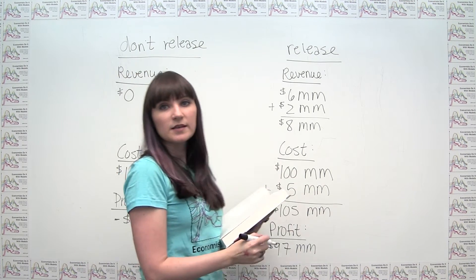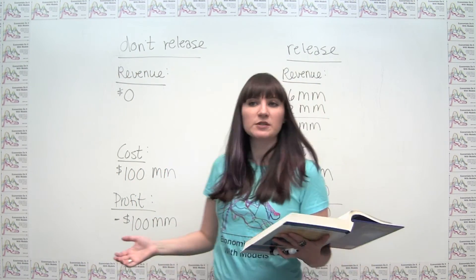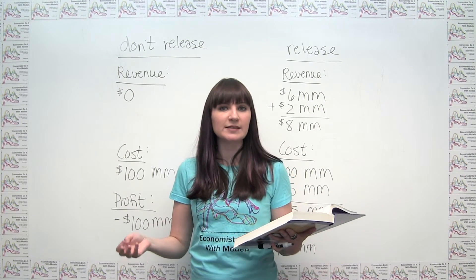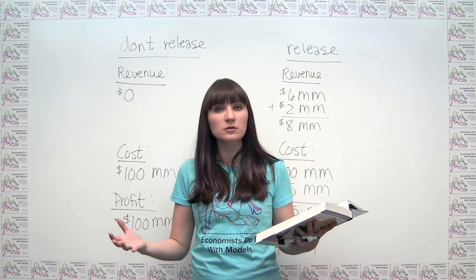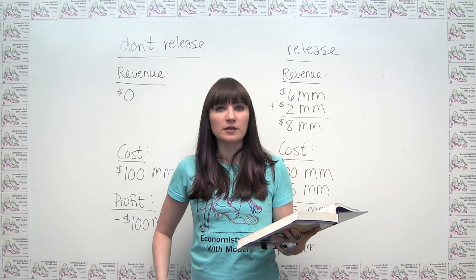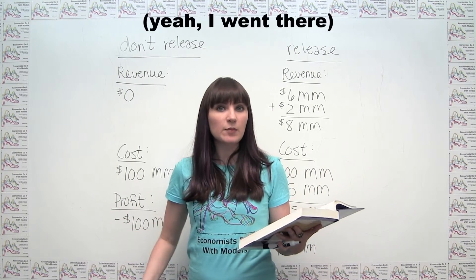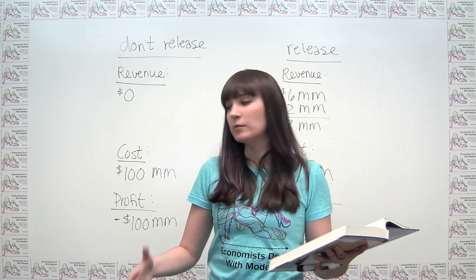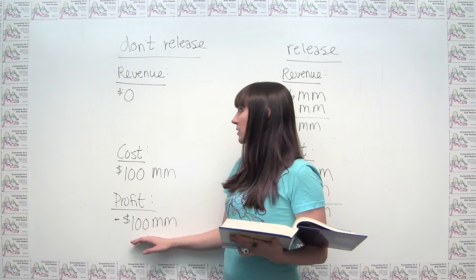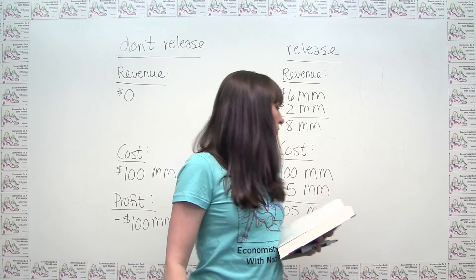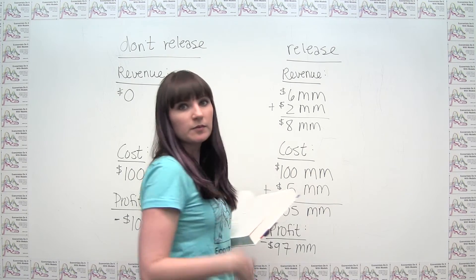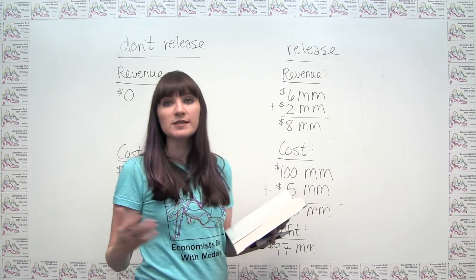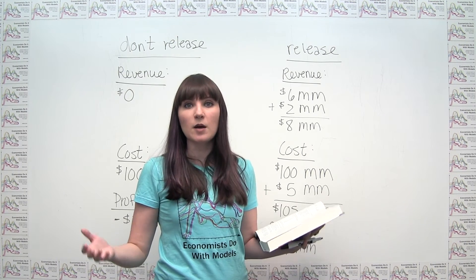Both of these options are pretty bad. But we don't have the option to go back in time and not make the movie at all — until you get a TARDIS, that's not going to happen. Among the options available at this point in time, we can either lose $100 million by not releasing the movie or lose $97 million by releasing the movie. Losing $97 million actually sounds like the least bad, or the best option. So the best option is actually to release the movie.